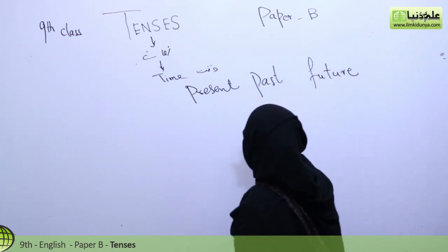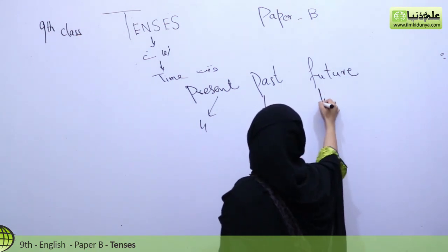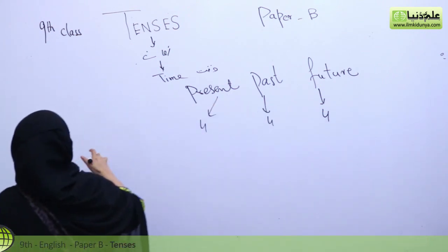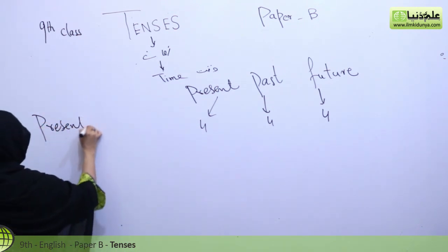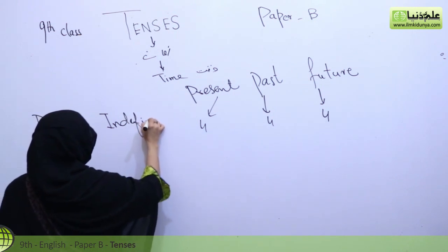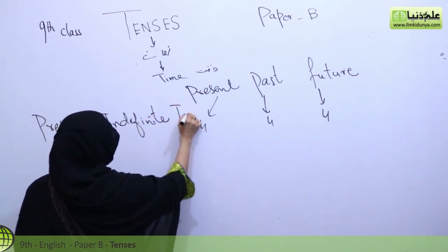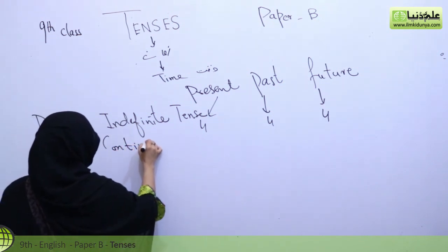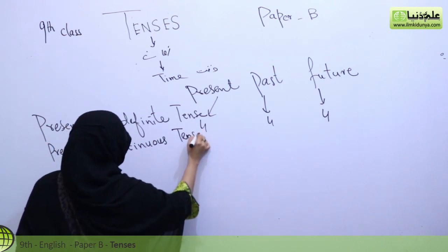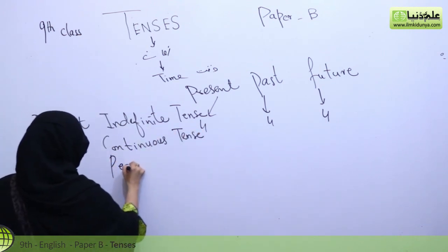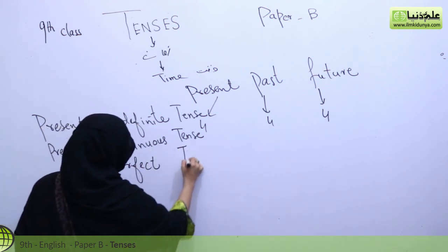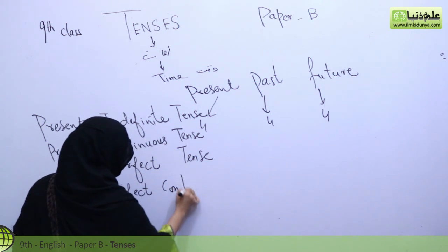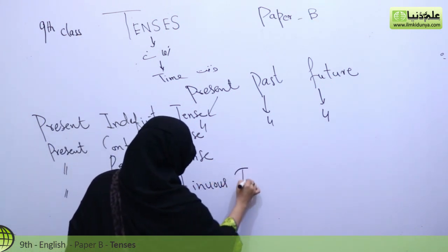Present, past, and future each have four types, which makes twelve tenses in total. If I talk about present, we have: number one, present indefinite tense; number two, present continuous; number three, present perfect tense; and number four, present perfect continuous tense.